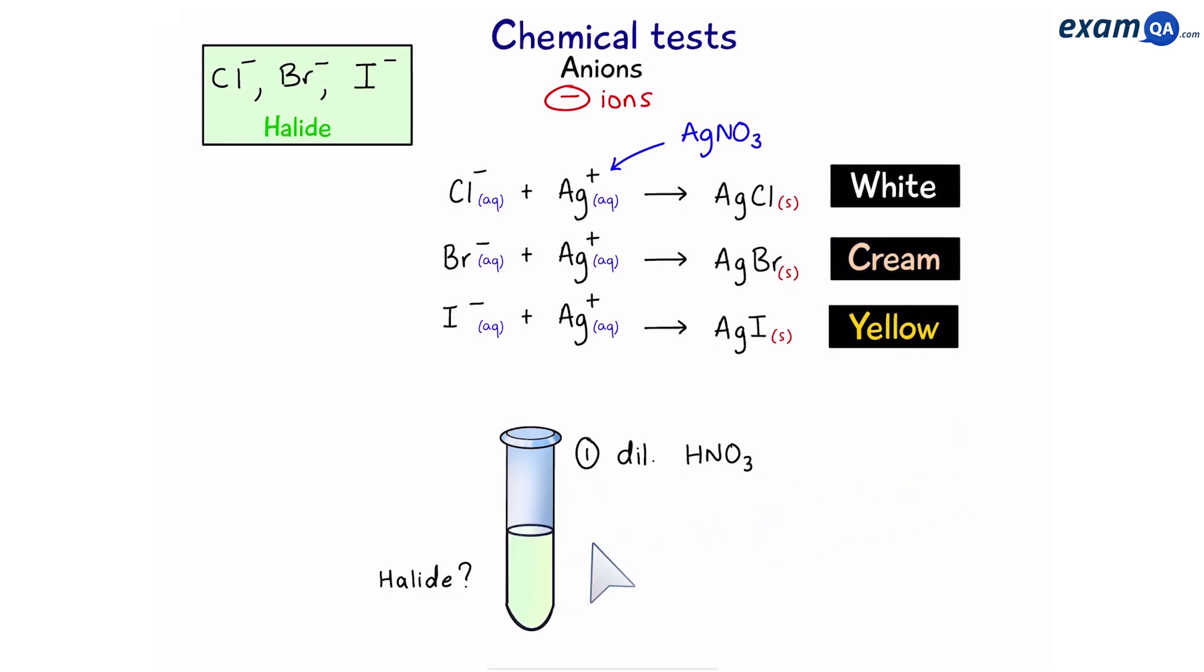Okay so we've removed impurities. Now we're going to add silver nitrate and then you should form a precipitate. Depending on the color of the precipitate, if it's white it means we had chloride ions, cream means we had bromide and yellow means we had iodide.